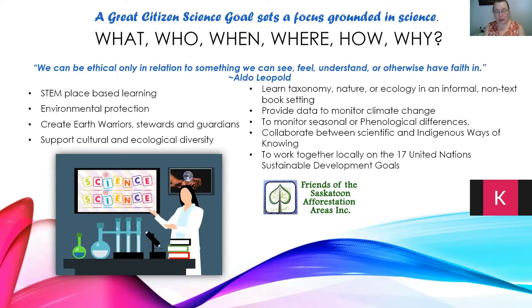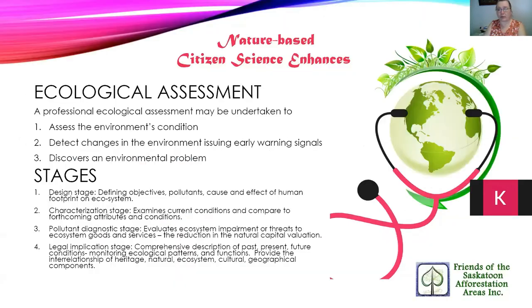One example noticed by a university student involved a blue dragonfly whose wing coloration was different due to heat — the heat was removing color from the wings, raising concerns about whether individuals of the species could recognize each other for mating. Citizen science is also a great way to work locally on the 17 United Nations Sustainable Development Goals, depending on which project you choose.